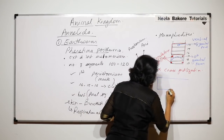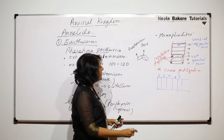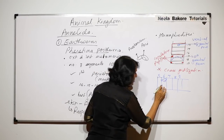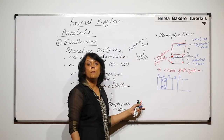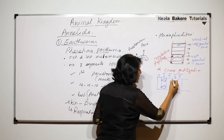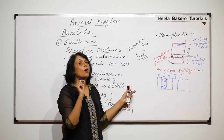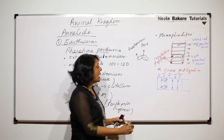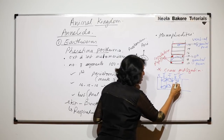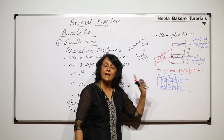In earthworms there are sac-like structures known as spermatheki, which open on the segments. If we draw the worm and mark segments 5, 6, 7, 8, and 9 — each spermatheka is a sac-like structure with an opening. There are four such pairs, located in the 6th, 7th, 8th, and 9th segments.